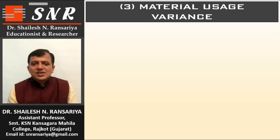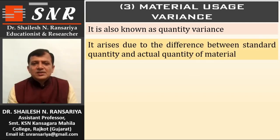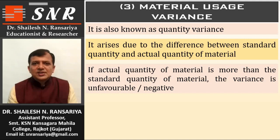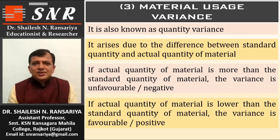The third variance is Material Usage Variance, also known as the quantity variance or material quantity variance. It arises due to the difference between standard quantity and actual quantity of material. If actual quantity is more than standard quantity, the variance is unfavorable or negative. If actual quantity is lower than standard quantity, the variance is favorable, meaning positive.